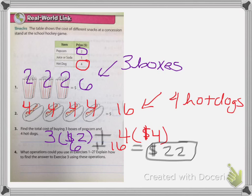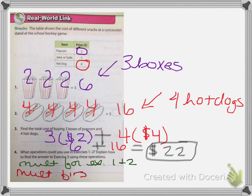It says what expression could you use in exercises 1 and 2. In exercises 1 and 2 you would have used multiplication. I'm just abbreviating shorthand because this is just an intro to the chapter, so you don't have to have super detailed notes. The next question says explain how to find the answer for exercise 3 using operations — basically you need to multiply first, then add. This was just a warm-up to get you introduced to what the section is about.